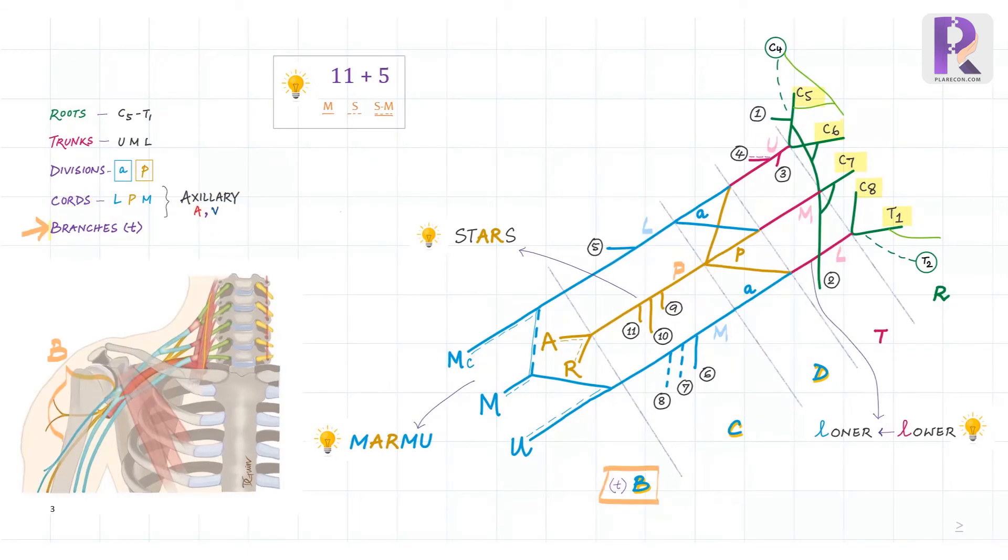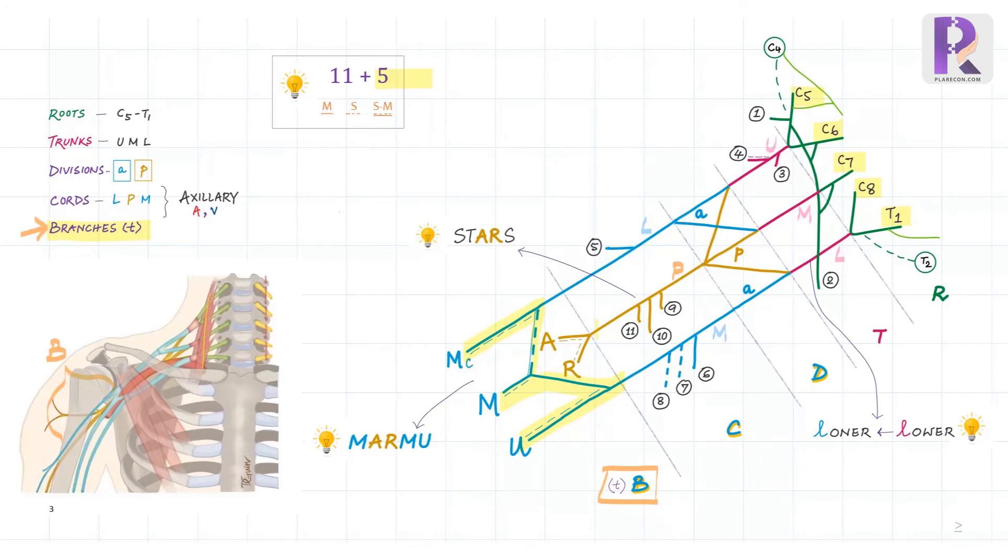Now comes the fifth and the final portion, the terminal branches in the characteristic M-shape. The lateral cord continues as the musculocutaneous nerve after giving the lateral root of the median nerve, while the medial cord continues as the ulnar nerve after giving the medial root of the median nerve, which joins the lateral counterpart. The posterior cord divides into a thinner axillary and a thicker radial nerve.